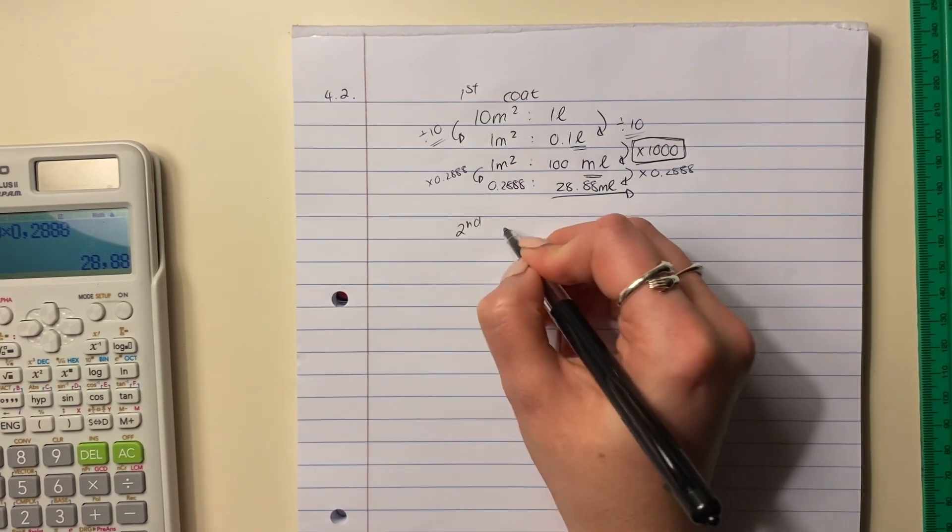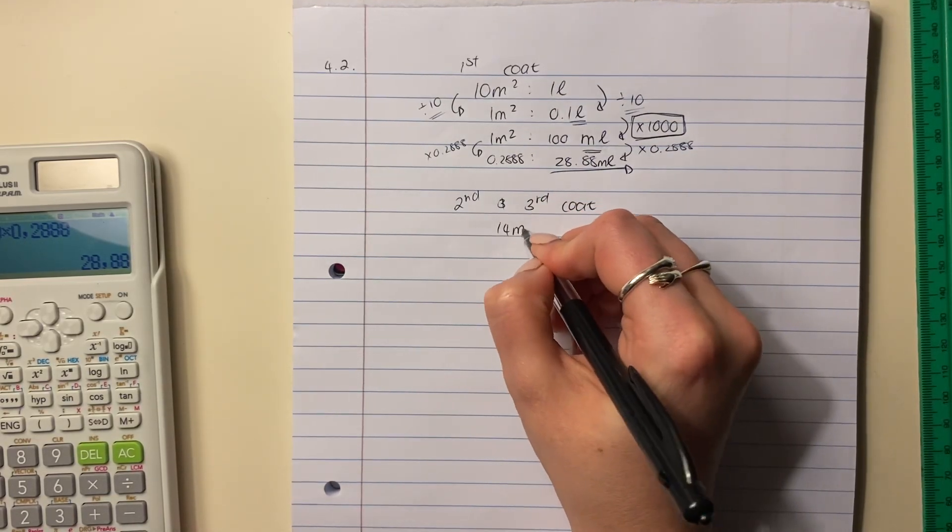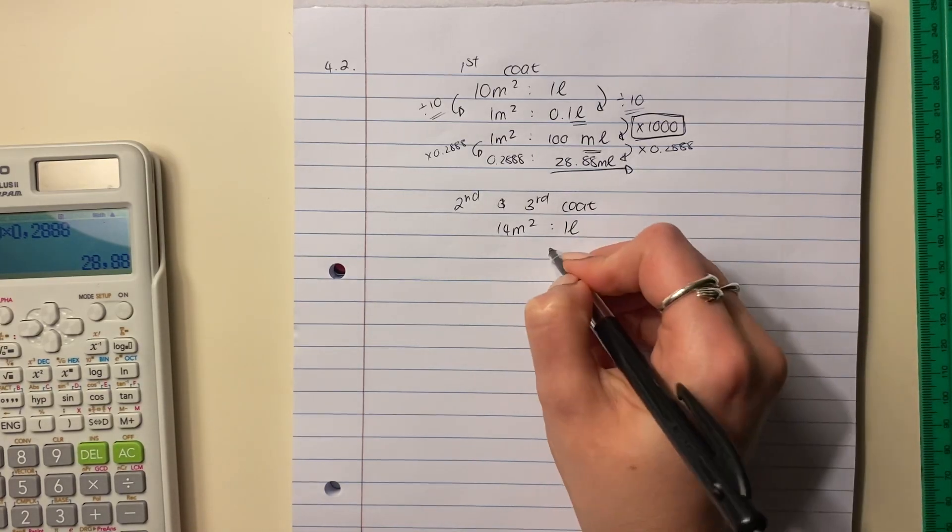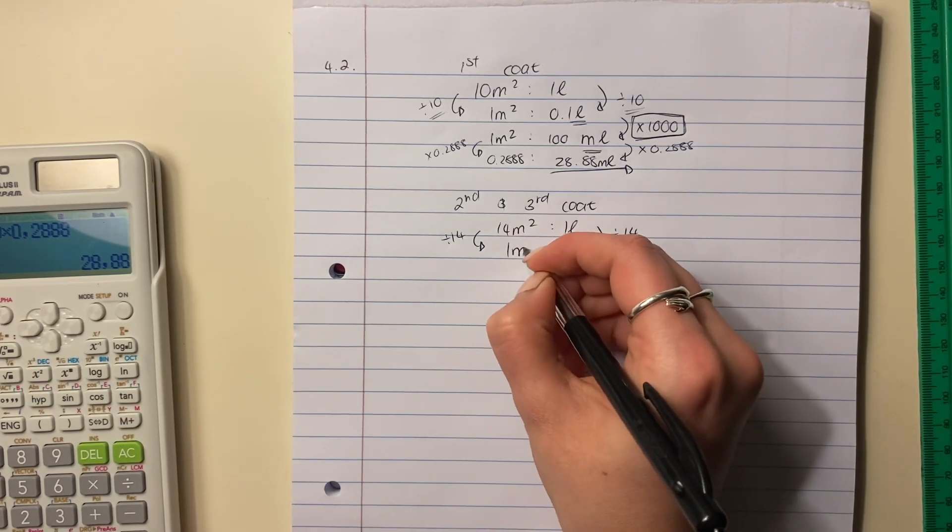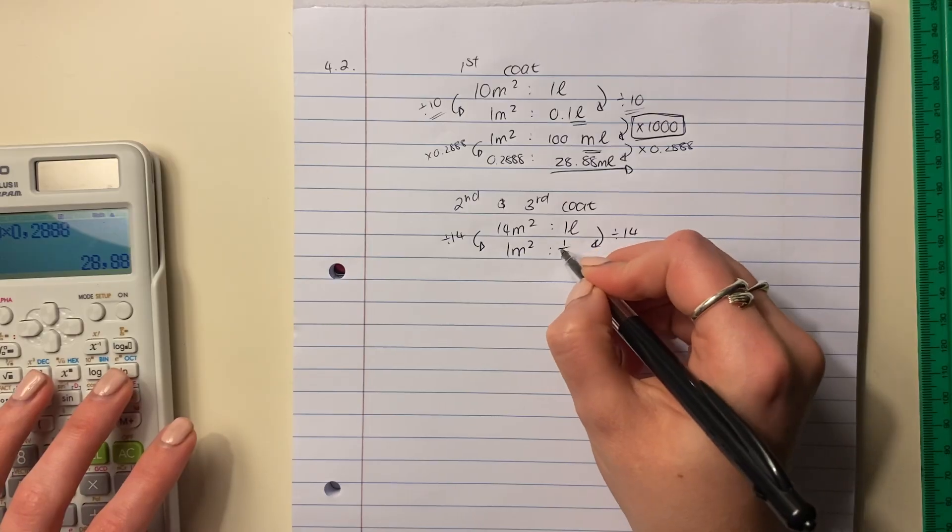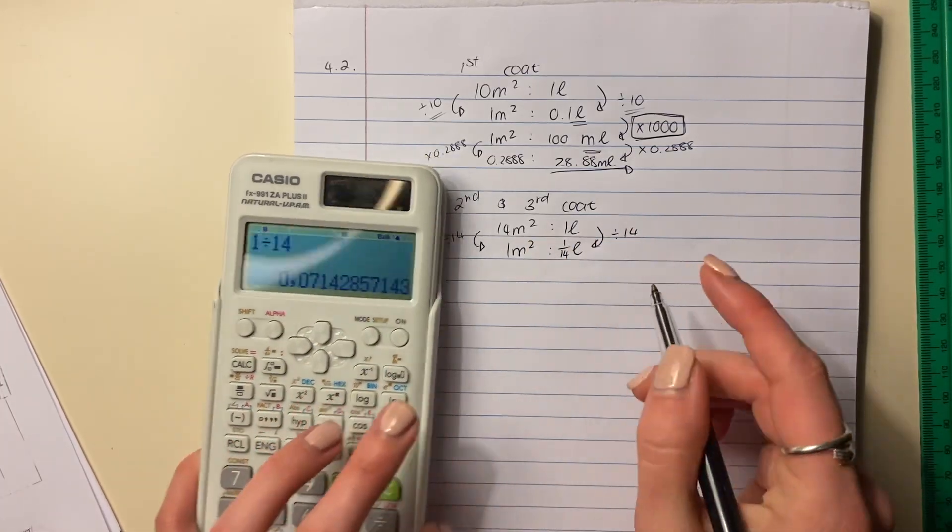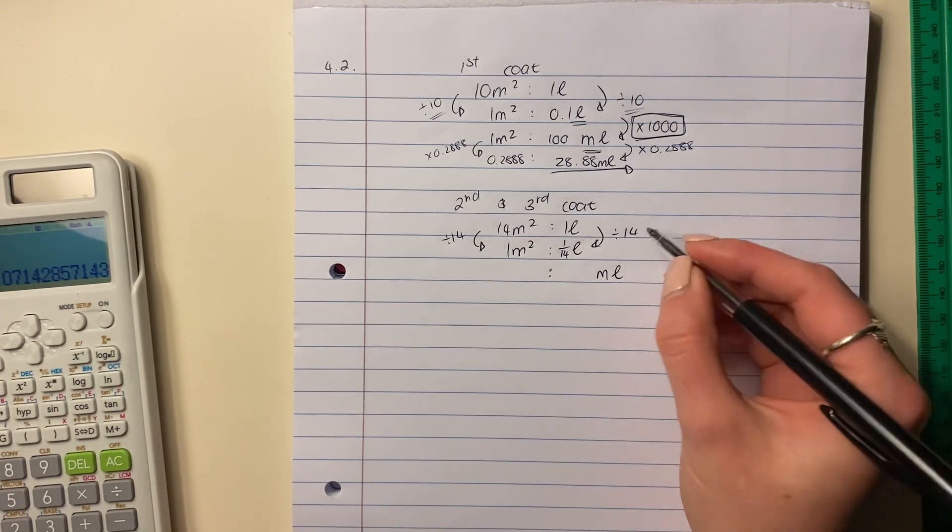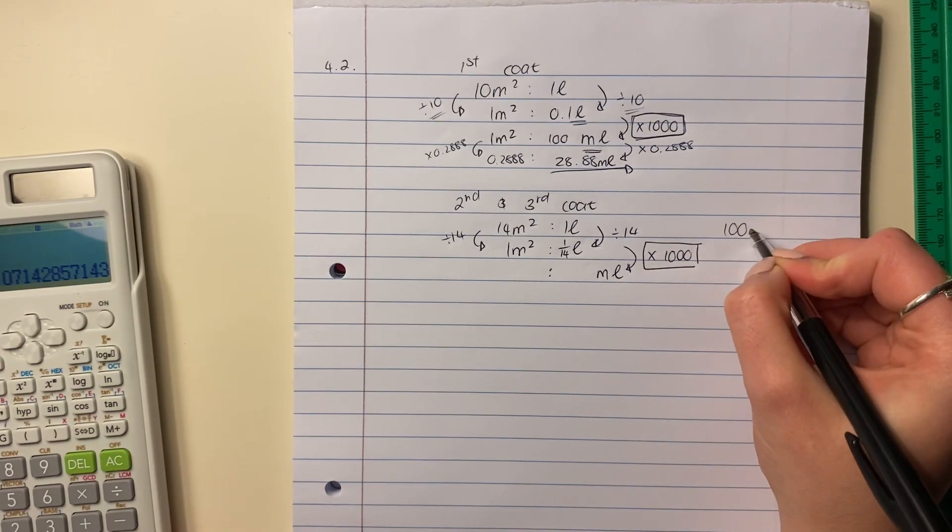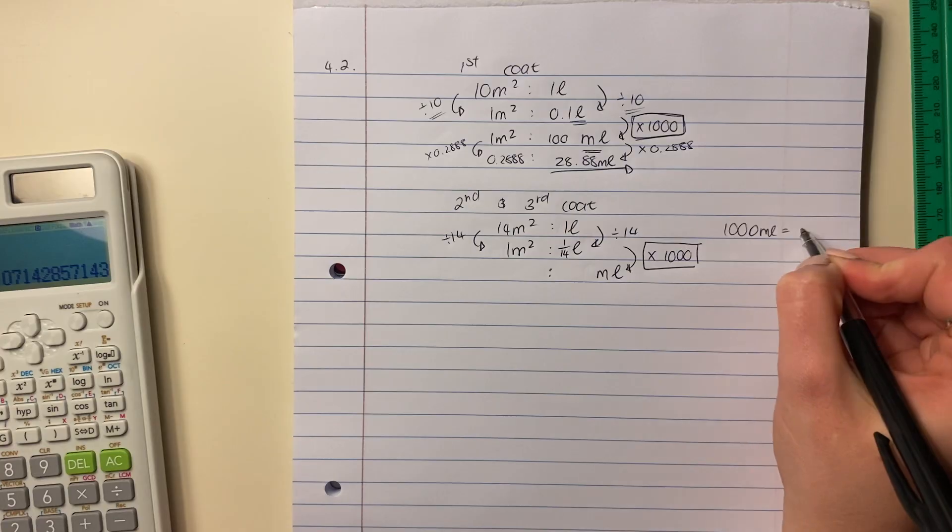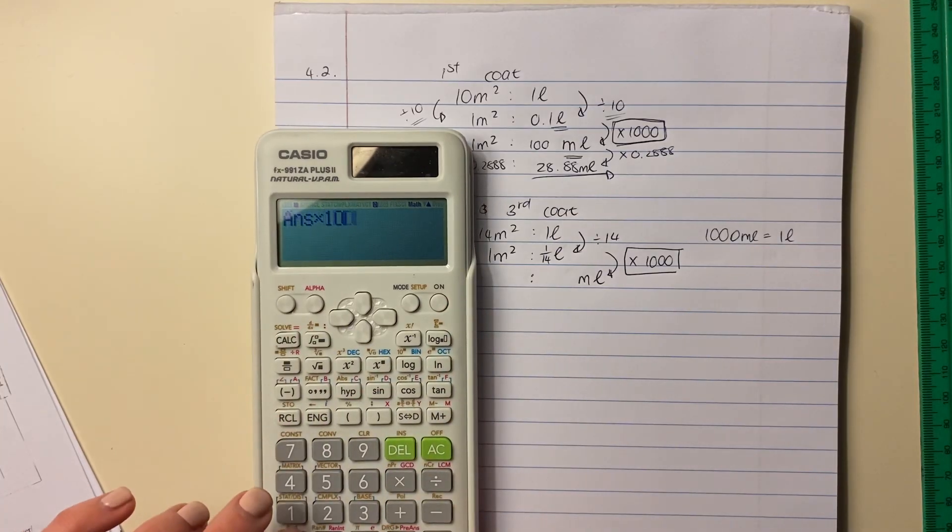Let's go and do our second and third coat. We need to work carefully here because it is a different ratio we're working with. Same thing as before. Divide both sides by 14. That side is going to become 1. This one is going to become 1 over 14 liters, because 1 divided by 14. It's got lots of decimal places, so I'm just going to keep it in a fraction. But like above, I want to put this into milliliters. How do I change liters to milliliters? I times it by 1,000 because there are 1,000 milliliters in 1 liter.